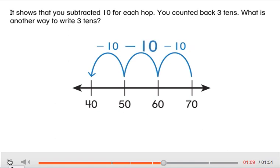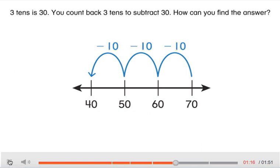You counted back three tens. What is another way to write three tens? Three tens is 30. You count back three tens to subtract 30.